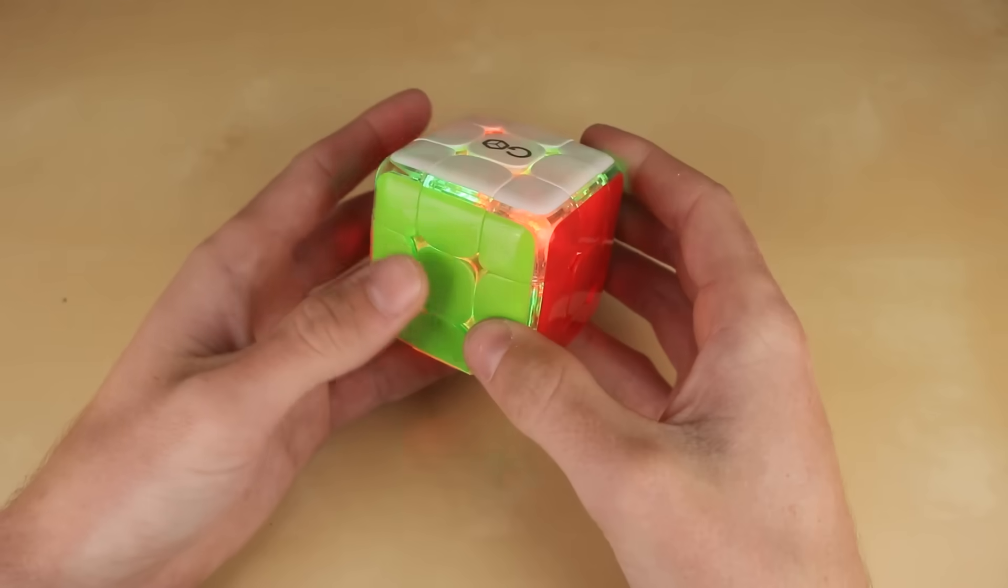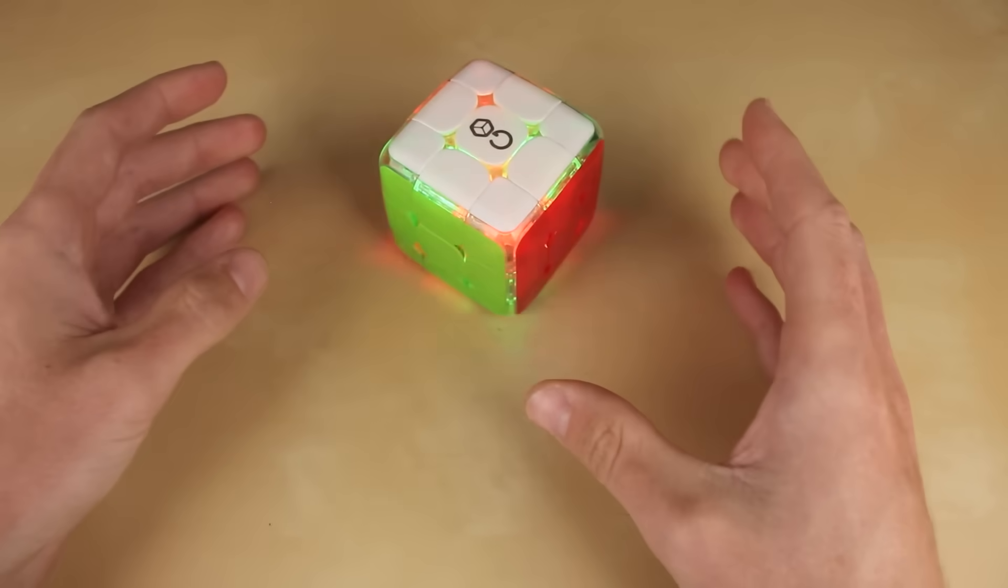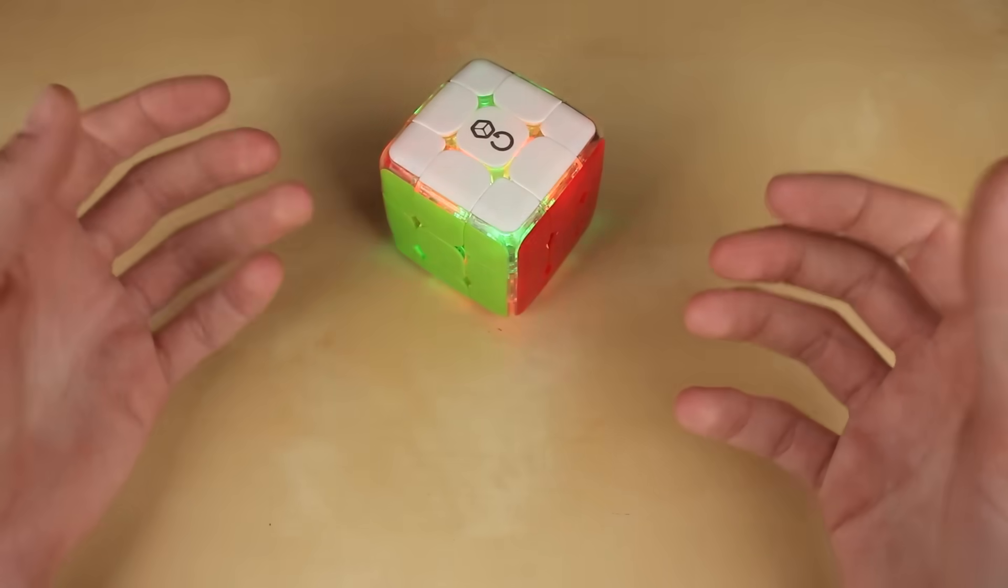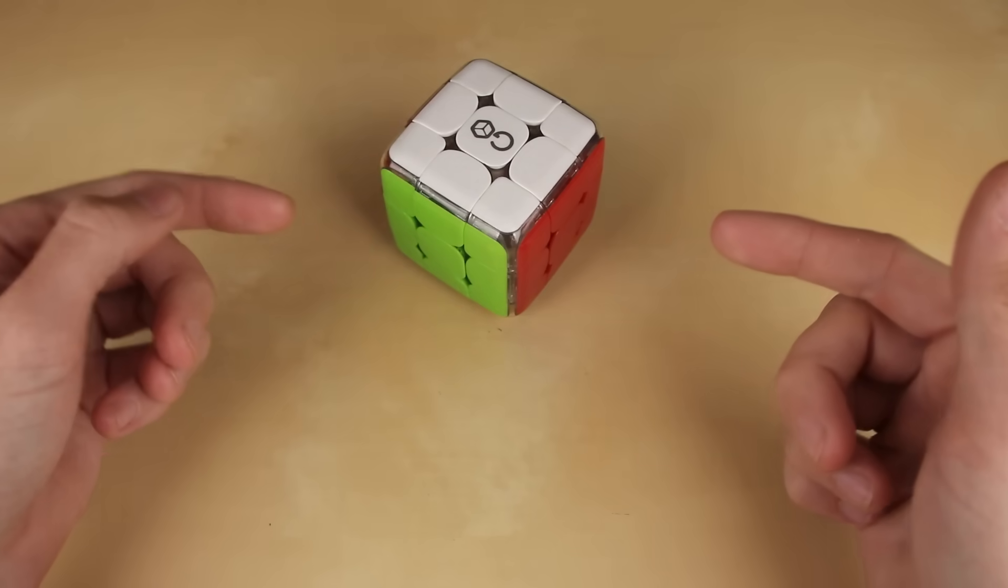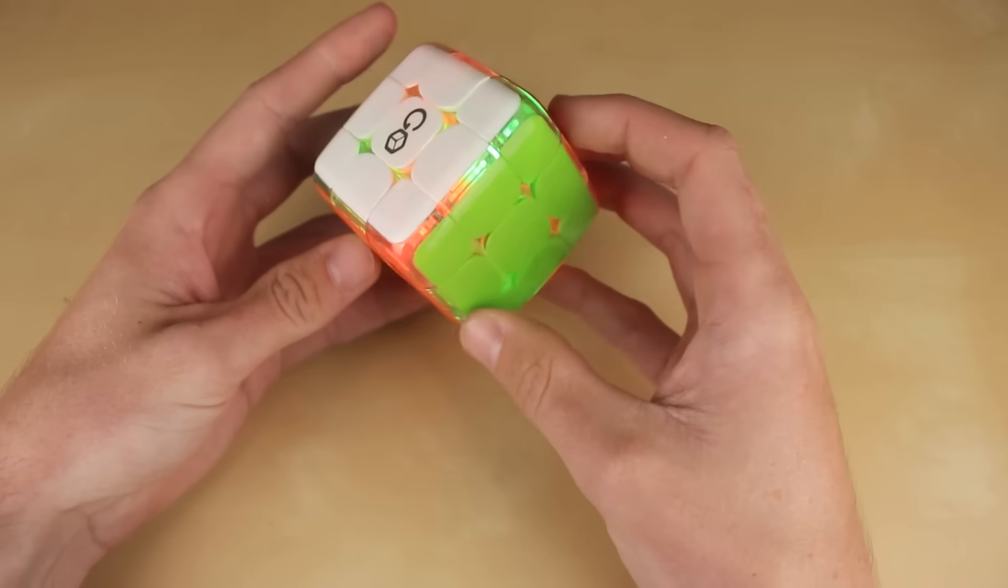And that vibration sensor I mentioned earlier means that if you're using the cube like this, it'll know that you're using it, so it'll keep the lights on. But if you just leave it sitting on a table not moving for one minute, the cube will detect that and then fall asleep. And then as soon as you pick it back up again, it'll go ahead and pick up right where it left off.